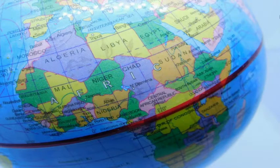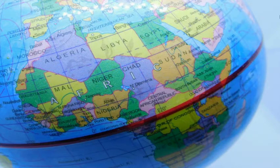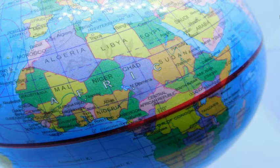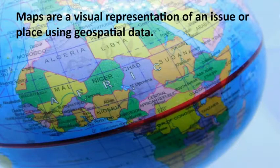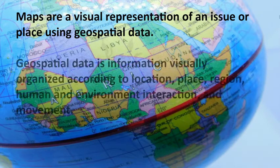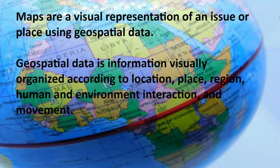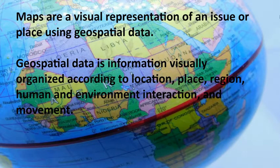So far, we've been exploring the thinking geographers use to analyze places and issues, as well as the tool of GPS. Another major tool used by geographers to analyze issues is maps. Maps are a visual representation of an issue or place using geospatial data. Geospatial data is information that is organized according to locations, places, regions, human environment interactions, and movement.